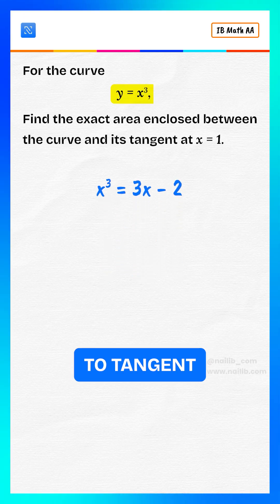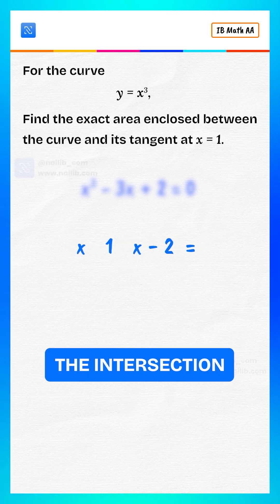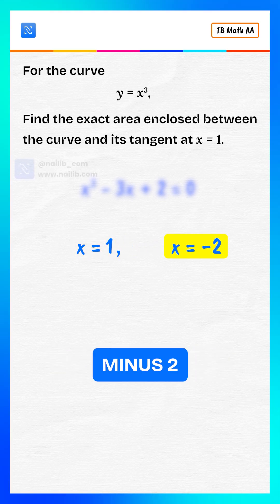Now set curve equal to tangent. Bring everything to one side. Factor it. So the intersection x values are x equals 1 and x equals minus 2.